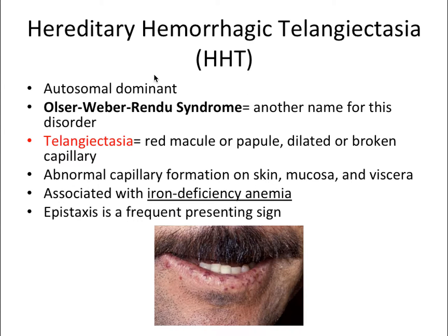Next we have hereditary hemorrhagic telangiectasia, or HHT for short, which actually has another name: Osler-Weber-Rendu syndrome. That's just another name for the same condition — it doesn't need any additional features to be called a syndrome, so those two terms are synonymous.